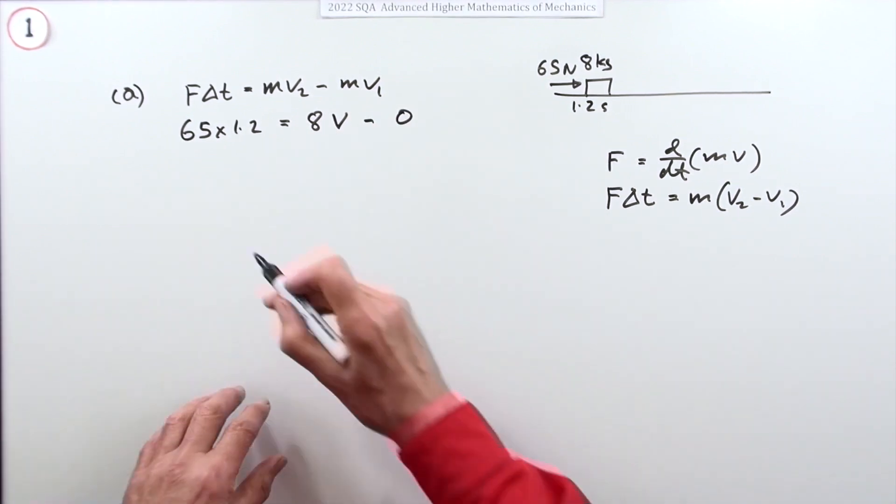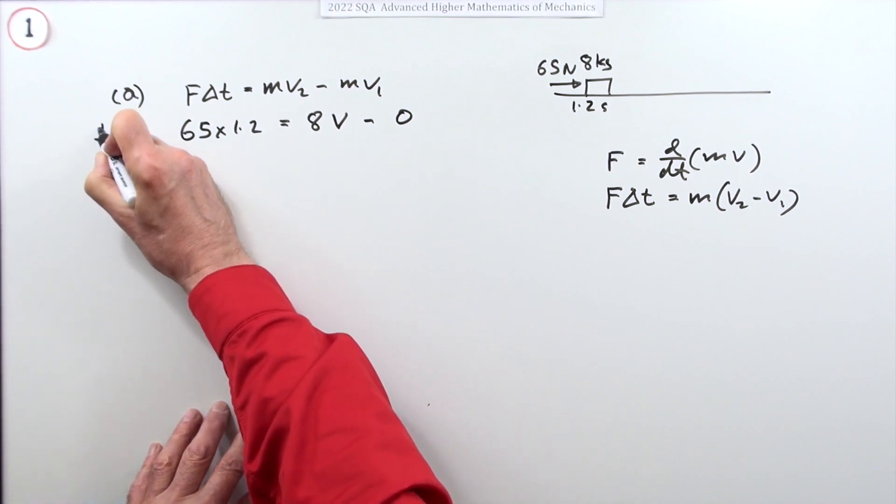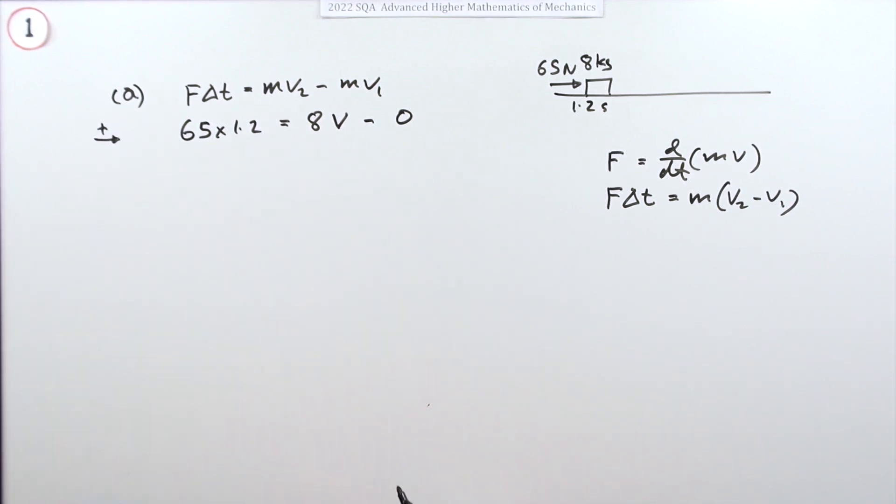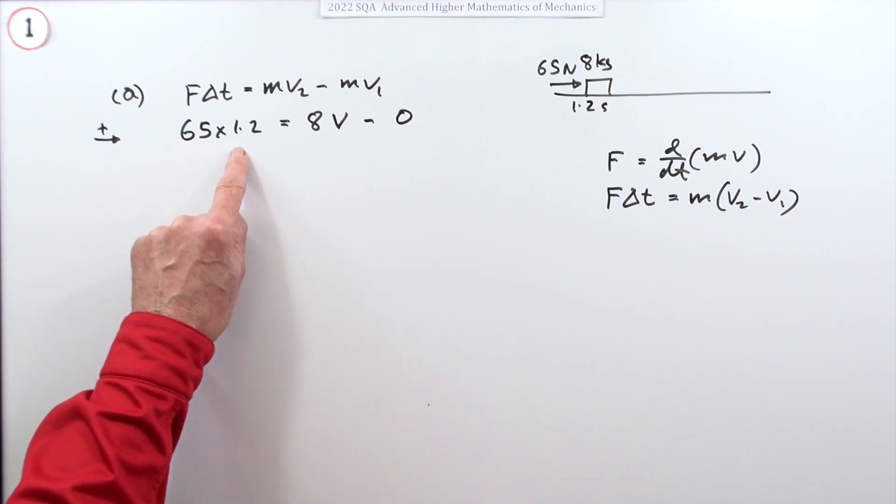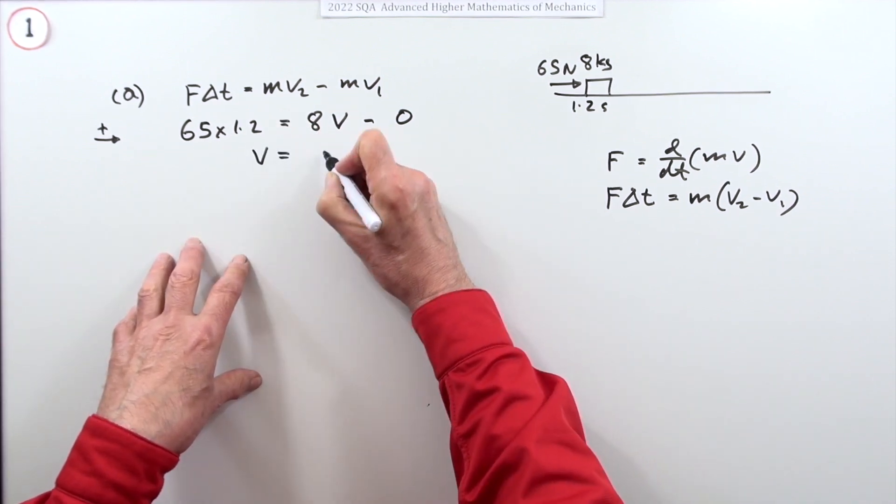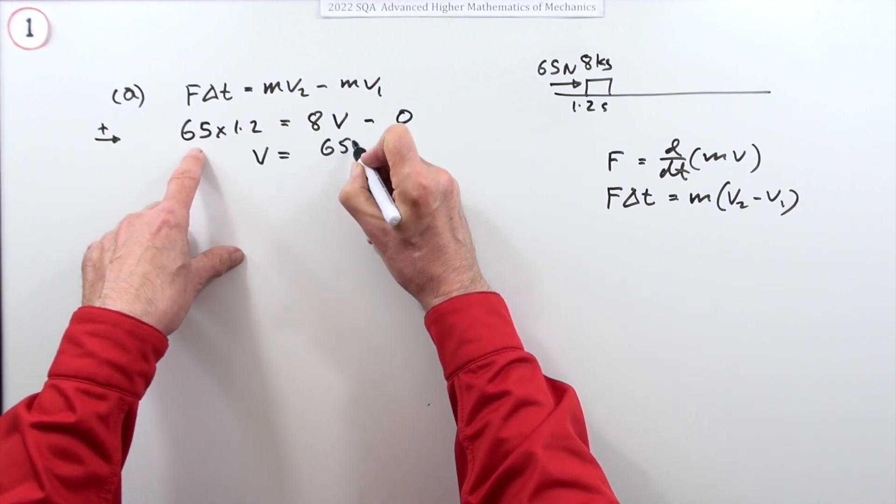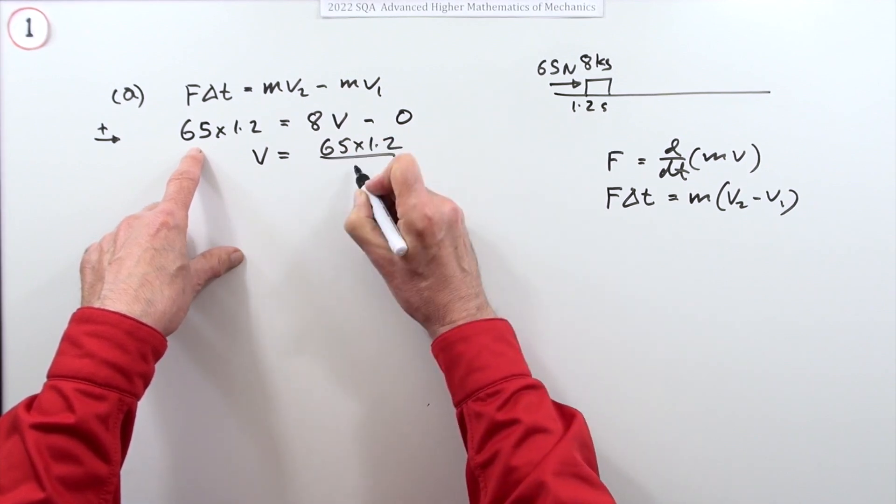And I'll just put that down as v because it's actually minus zero, so we've only got the one velocity. And I should also put down this is the direction we're considering positive. Now for working that out there's actually a mark, but you don't actually need to work that out to use it in the rest of the equation.